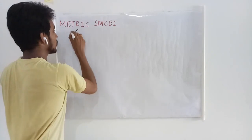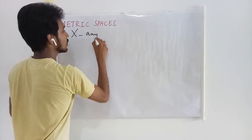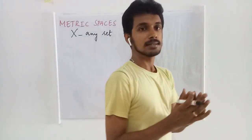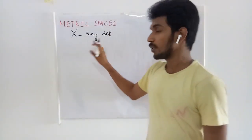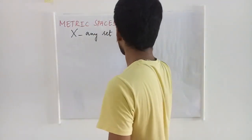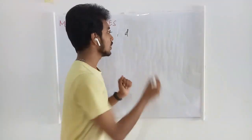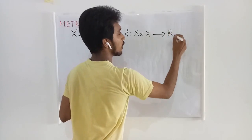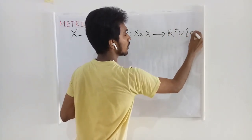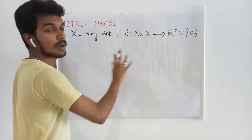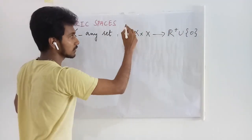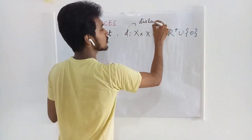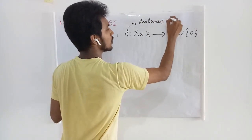In order to define a metric space we need any non-empty set as the base. Then we define a mapping D from X cross X to the set of non-negative real numbers.